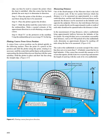Plotting course from a given position can be done quickly in the following manner. Place the point of a pencil on the position and slide the plotter along this point, rotating it as necessary, until the center hole and the figure on the protractor representing the desired direction are lined up with the same meridian. Hold the plotter in place and draw the line along the straight edge. Figure 4-7. Measuring distance: one of the disadvantages of the Mercator chart is the lack of a constant scale.